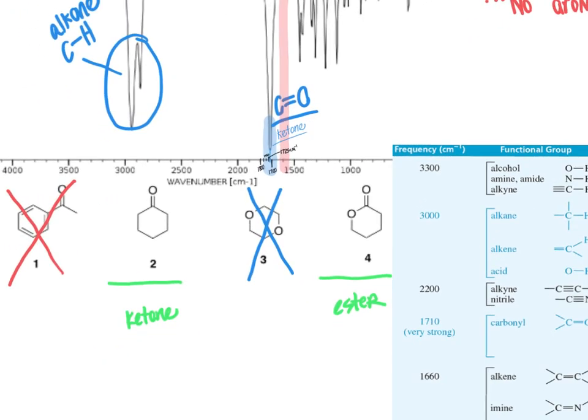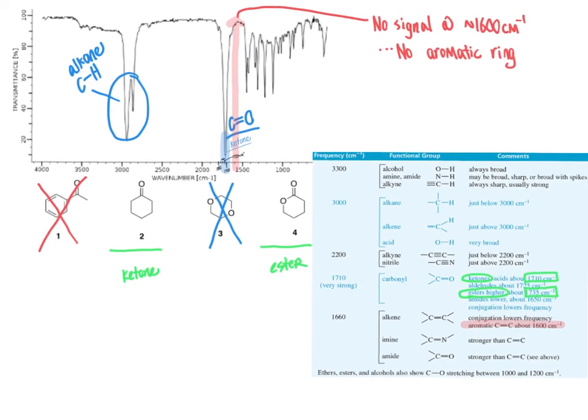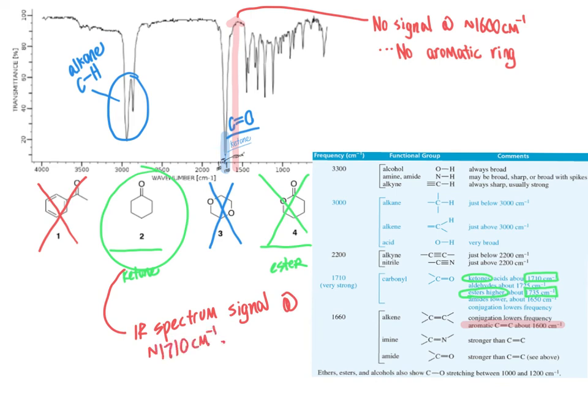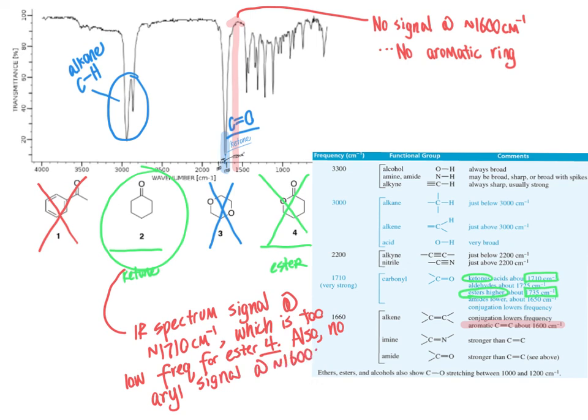1710 is what we'd expect to be for the signal for a ketone. 1735 is what we'd expect to be the signal for an ester. And so therefore, I am going to eliminate the ester and circle ketone as our correct response here. And the ways that we rationalize that the ketone is based on the IR spectrum signal is at about 1710 inverse centimeters, which is too low of a frequency for the ester, which is compound number four. Also, there's no aromatic signal at approximately 1600 inverse centimeters. So compound one can't be correct.